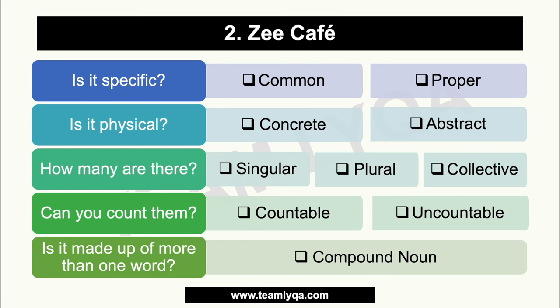Next word: 'Z Cafe.' The Z and Cafe are capitalized, so it's a proper noun. Is it physical? A cafe is a brick-and-mortar store — it's concrete. How many? It's not made plural, so it's singular. Can you count it? Yes, so it's countable. Is it made up of more than one word? Yes — two words — so it's also a compound noun. Therefore, 'Z Cafe' is: proper, concrete, singular, countable, and a compound noun.